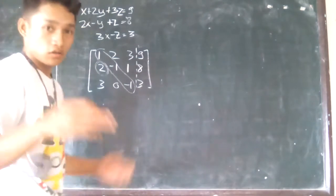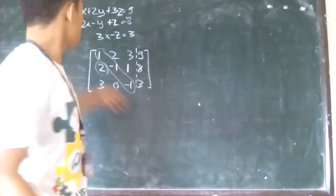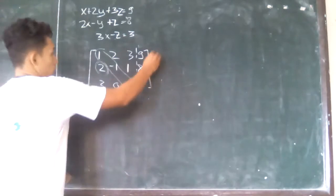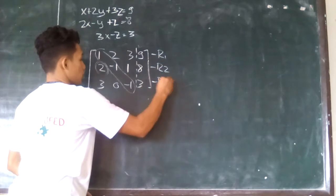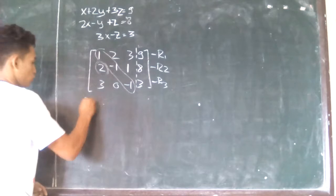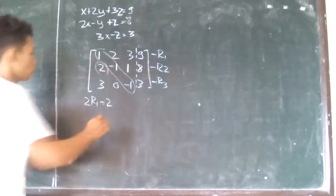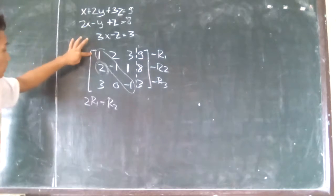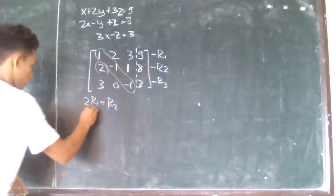There is a strategy to make the 2 become 0. Remember that this is row 1, row 2, and row 3. I find that if I multiply row 1 by 2 and subtract row 2 from it, I know that the 2 becomes 0.